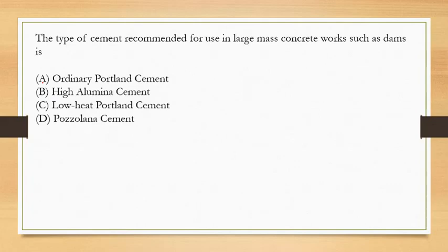Next question: the type of cement recommended for use in large mass concrete works such as dams is? When we work in large mass concrete works like dams, excessive cement is used. This produces excessive heat through hydration, which is the reaction between cement and water. To avoid excessive heat production, we use a cement that produces low heat. The answer is option C, low heat portland cement.